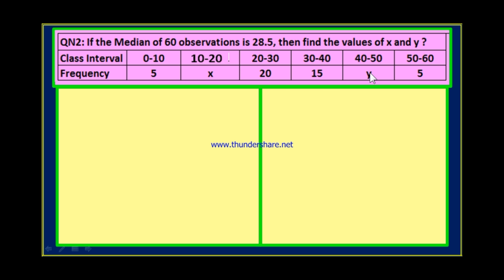Here we have to find two values, x and y. In order to find these two values, we are given that the total number of observations, which is the sum of frequencies, is 60. And the second point is the median of the total data is 28.5. Now, in order to find the median, we already learned that three columns are necessary: the first column for classes, the second for frequencies, and the third for less than cumulative frequency. Let us construct a table now with these three columns.